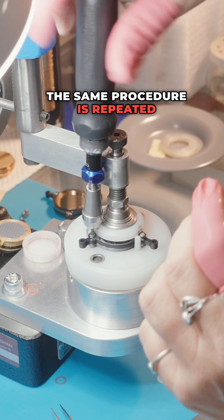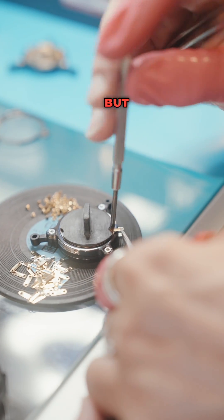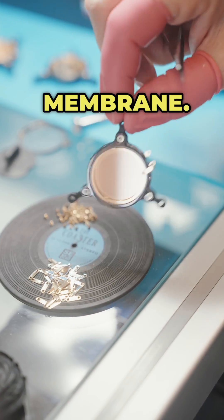The same procedure is repeated upside down for the double capsule design. There is already a solder lock on the electrode, but Siggy still has to screw it onto the membrane. Boom!